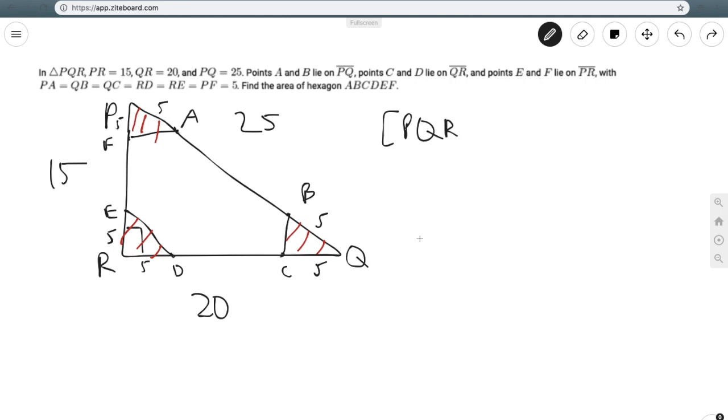Now the area of the big triangle, as we know, is just going to be 1/2 base times height, which is 15 times 20 divided by 2, which is 150.